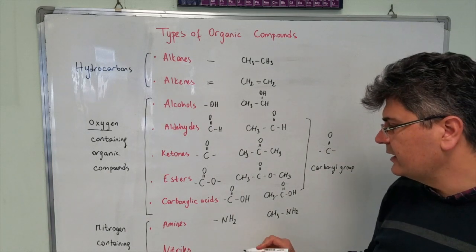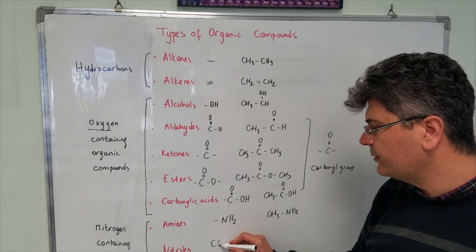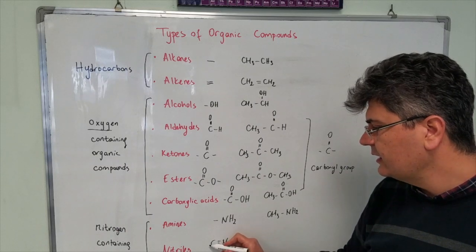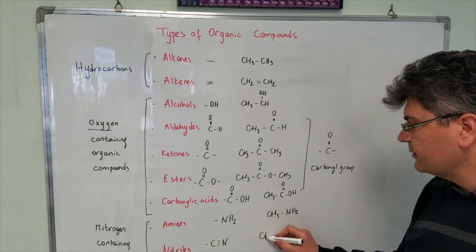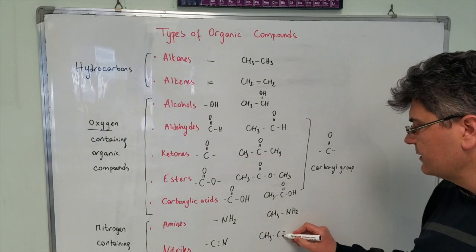Nitriles are the ones which contain a carbon atom with a triple bonded nitrogen. This carbon atom is connected to another radical. It's going to be methyl nitrile.